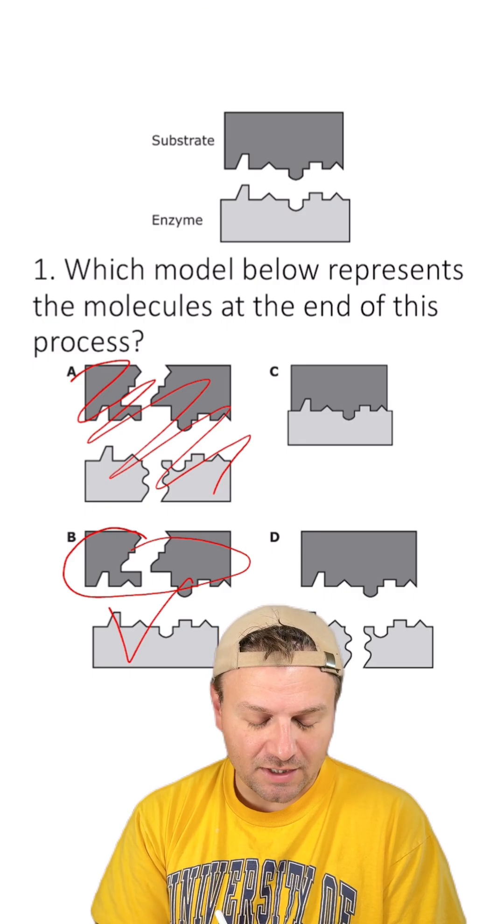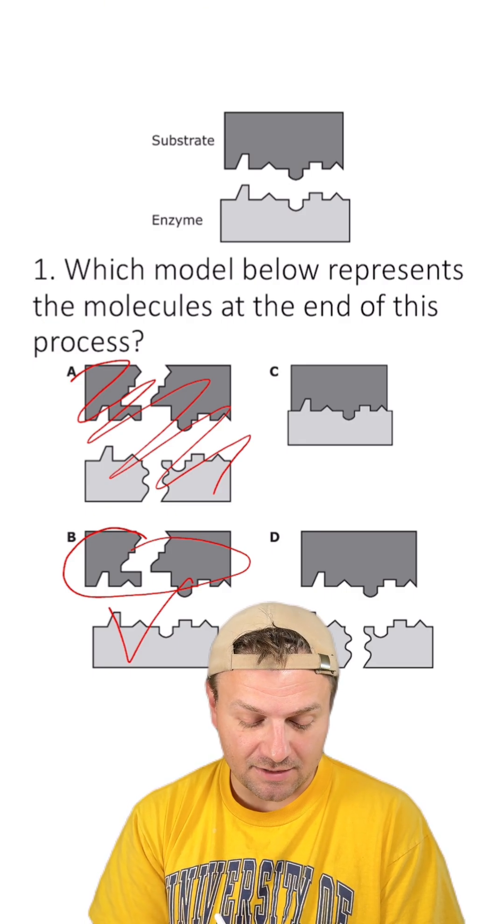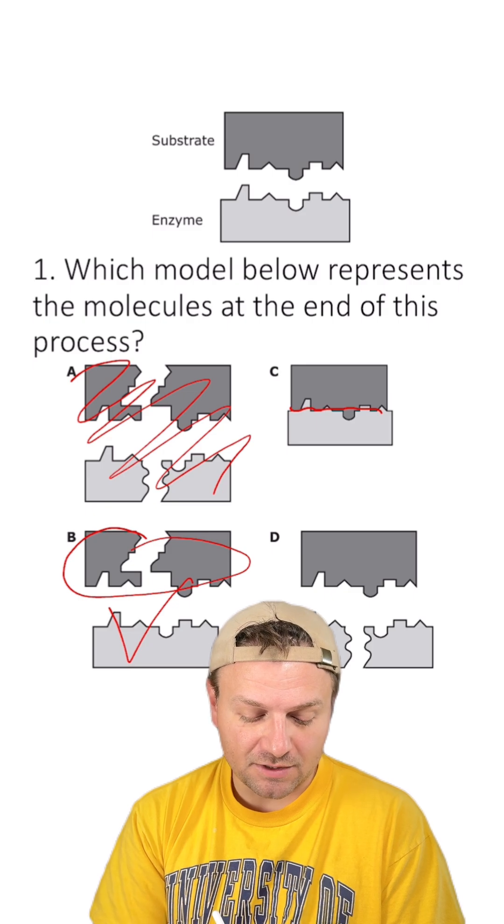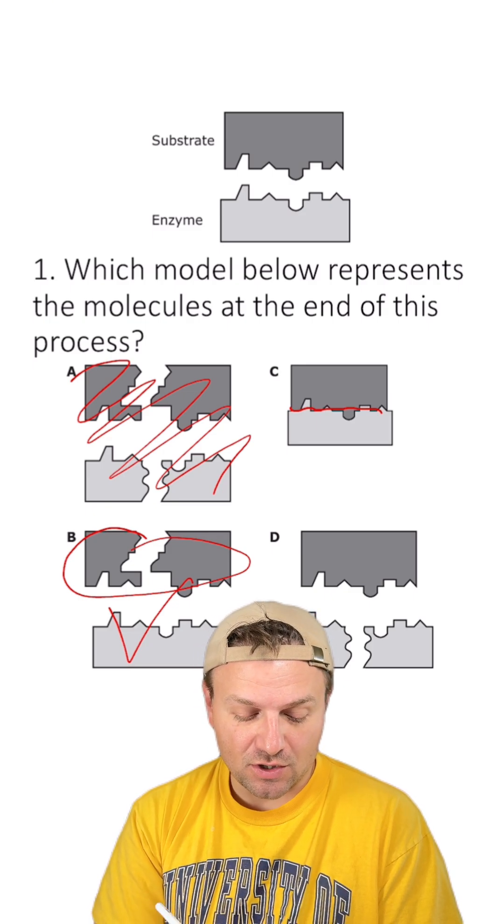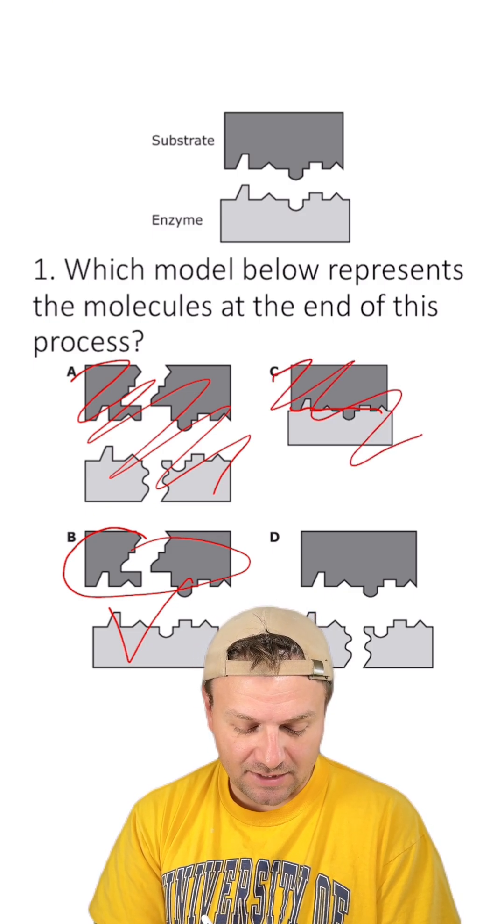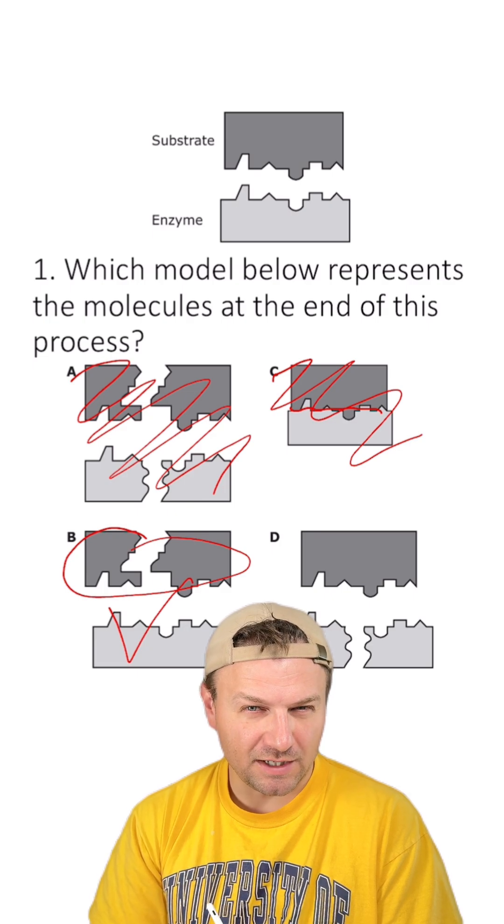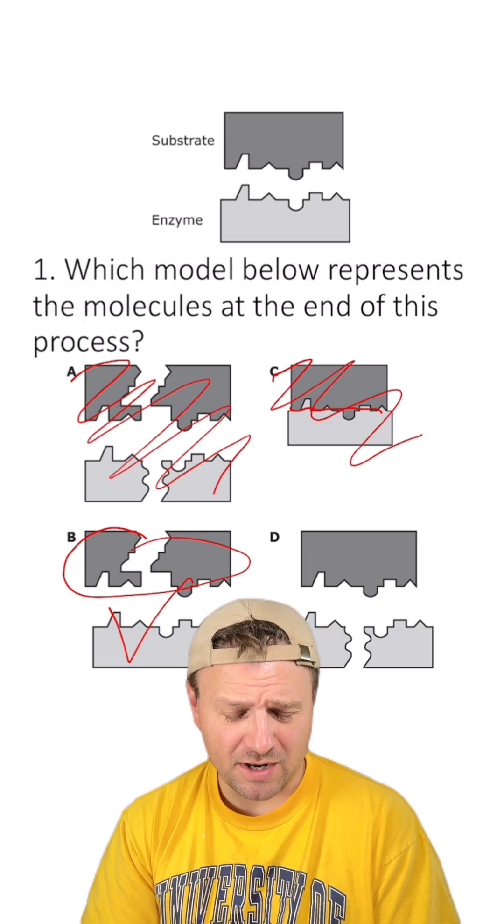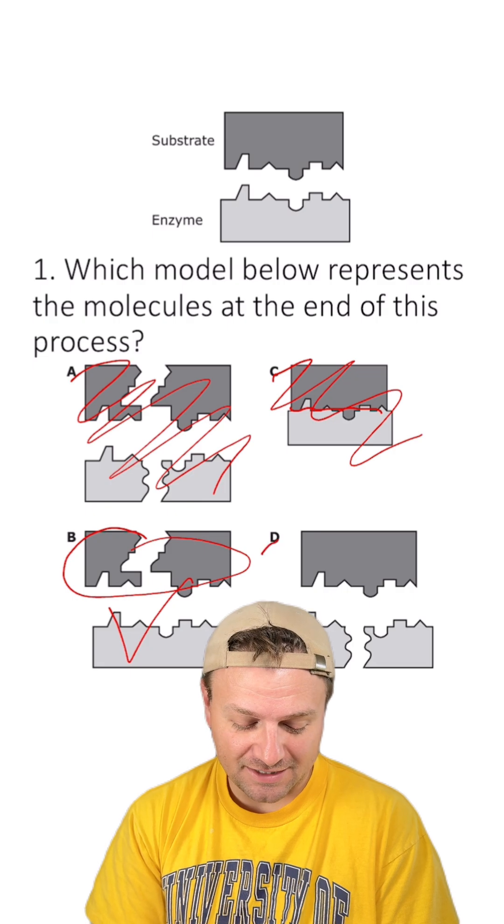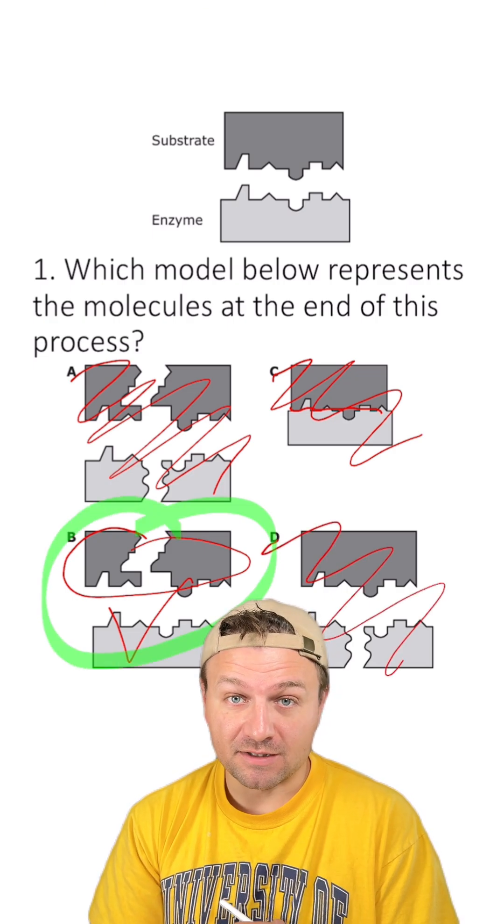C, this is what's going to happen when the substrate meets the enzyme at its active site here, but it's going to be broken down after this. So C is not right. D, the substrate's not broken down, but the enzyme is. This is a reverse of what would happen and it doesn't happen. So D is out. This is why B is the right answer.